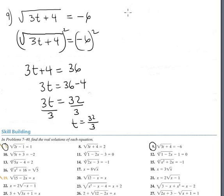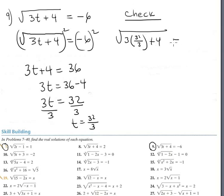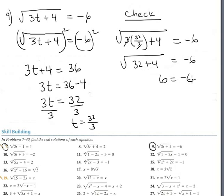Checking t equals 32 over 3 in the original equation: square root of 3 times (32/3) plus 4 should equal negative 6. The 3s cancel, giving square root of 32 plus 4, which is square root of 36, which equals 6. But 6 does not equal negative 6, so there is no solution.